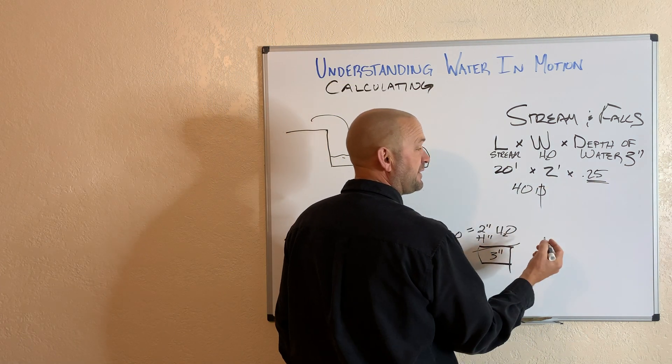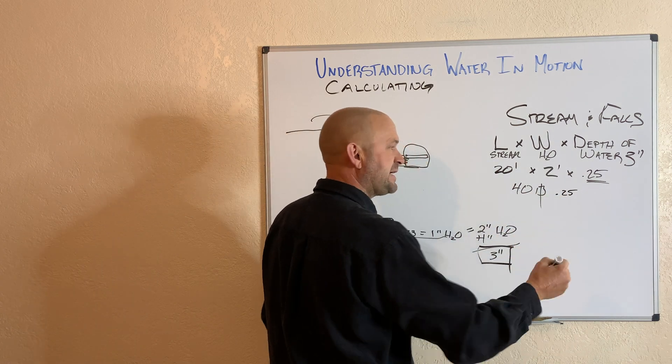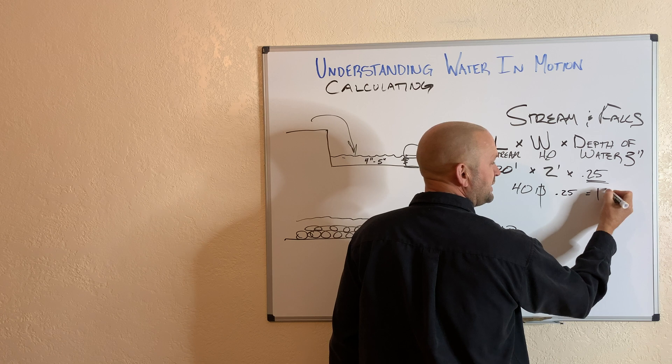So in order to get cubic feet, that's where that 0.25 number comes in. That's my three inch depth times 0.25, which is 10. That's going to give me equals 10 cubic feet.